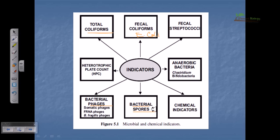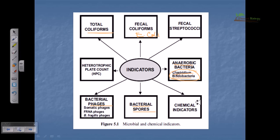Bacterial spores are also very important because they are easy to manipulate and can survive in harsh environmental conditions — they only germinate when they find optimum environmental conditions, making them safe to handle. We can also utilize anaerobic bacteria like Clostridium and Bifidobacteria, which do not need oxygen for growth and can be used separately in an anoxic chamber. Additionally, heterotrophic plate count can be used, and sometimes chemical indicators can be used to monitor water quality.